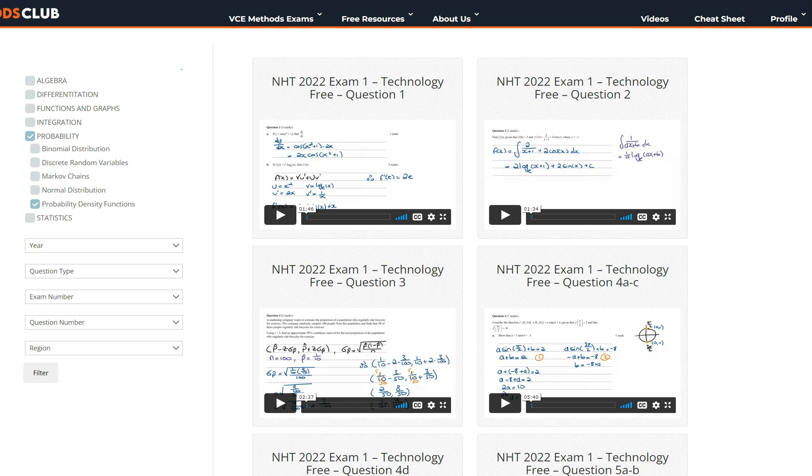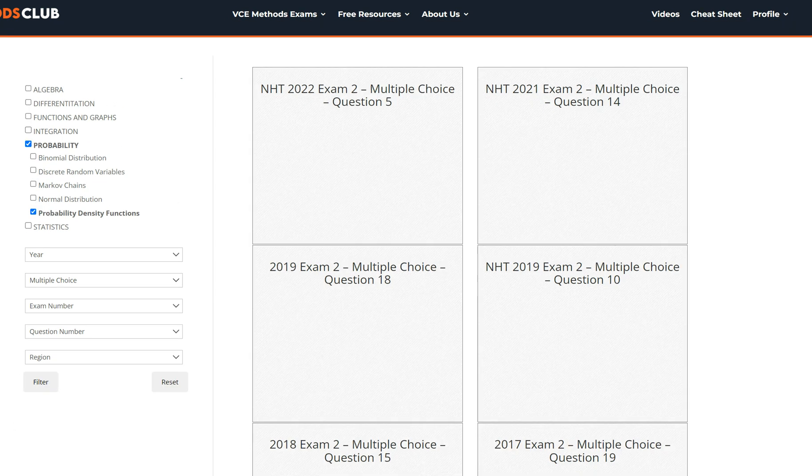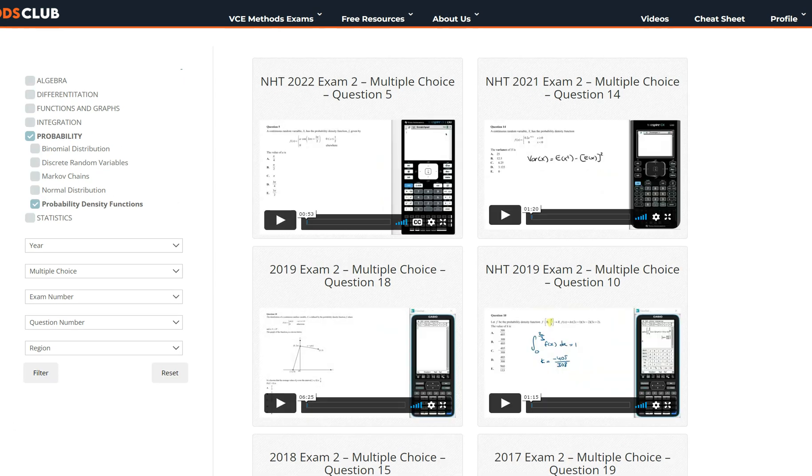You then have a few other options. If you want to go question type you can select take free multiple choice or extended response. Let's say you want to do multiple choice questions, you click on that and then click on filter.